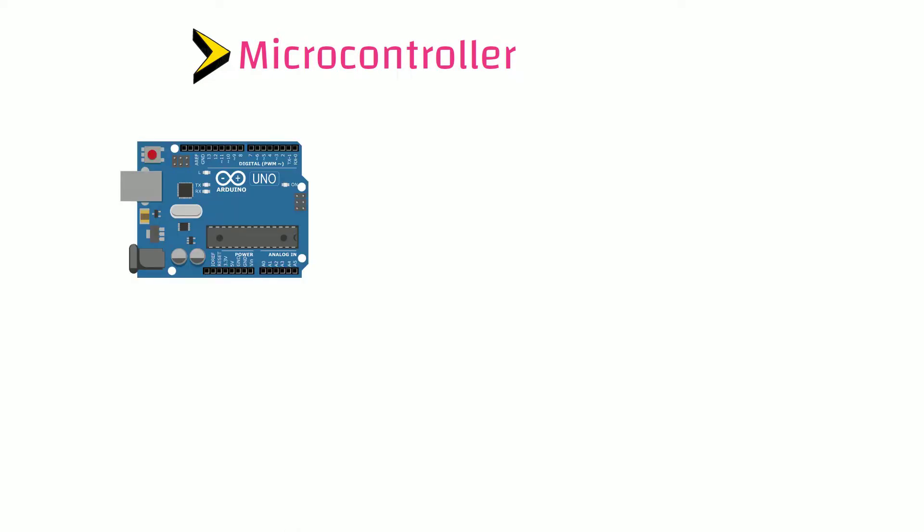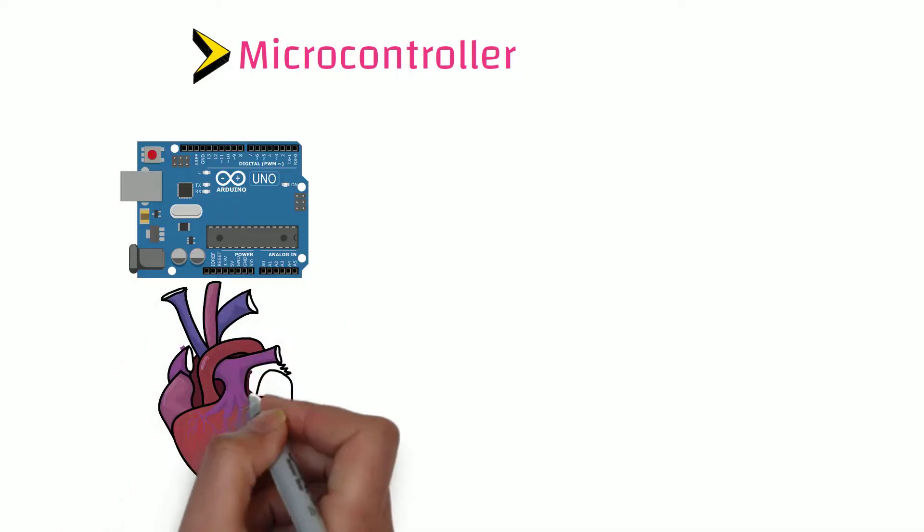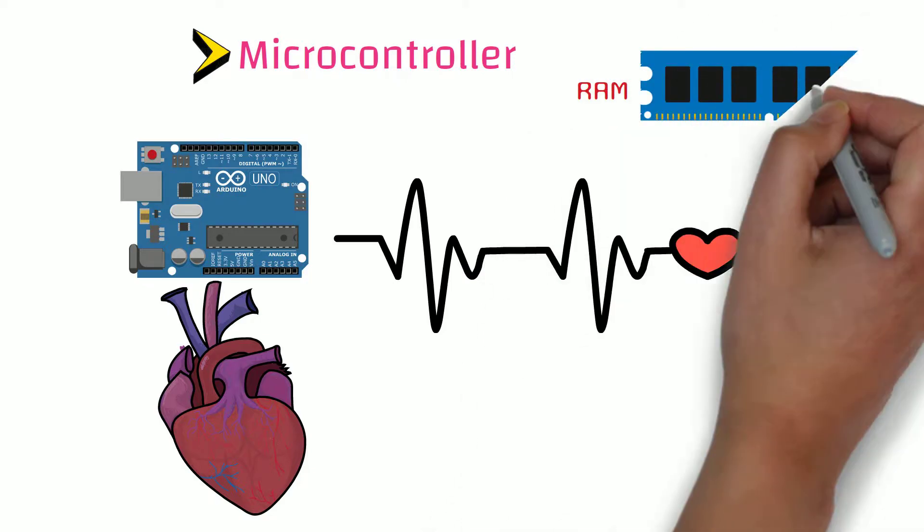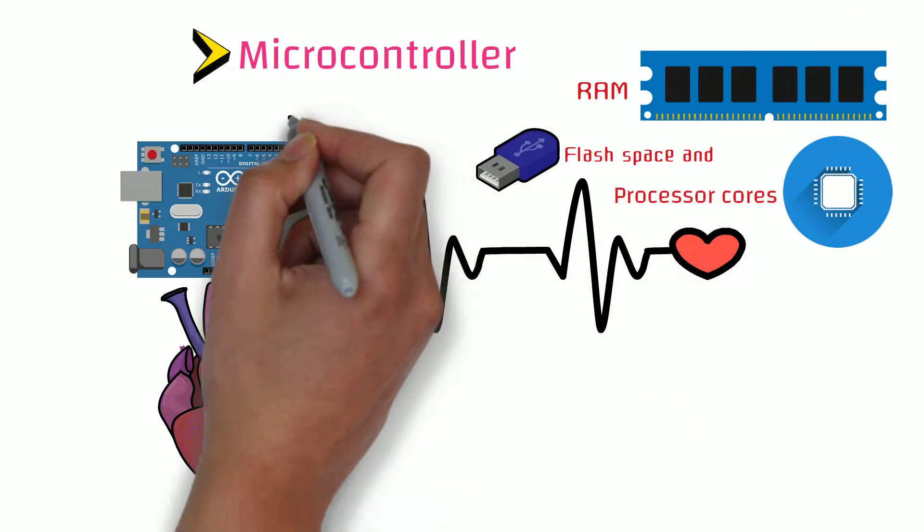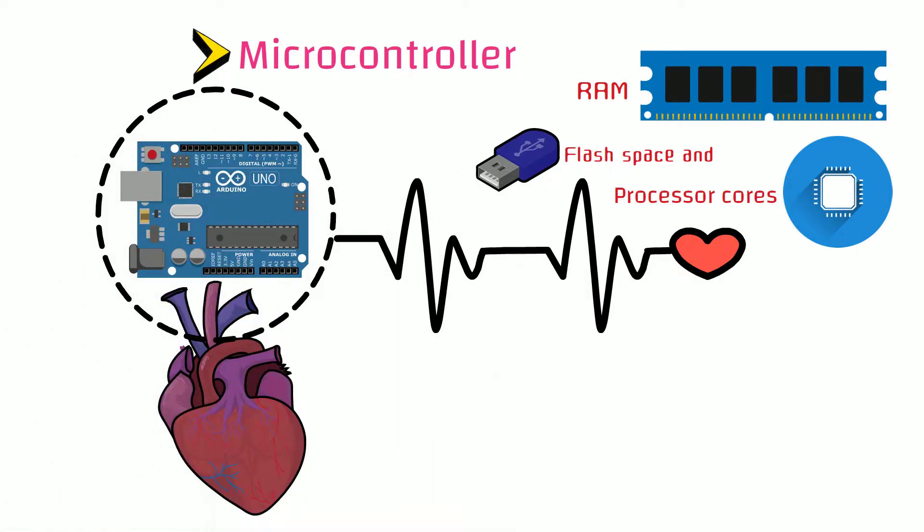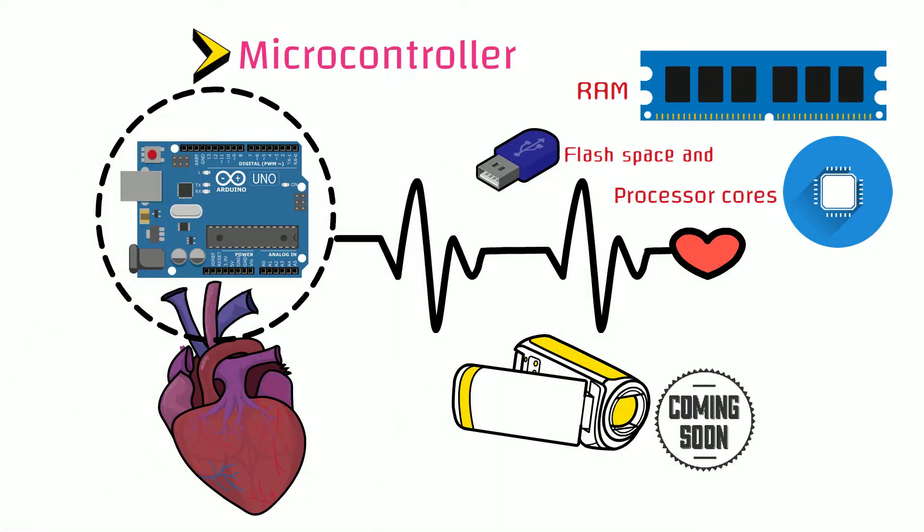Microcontrollers are considered to be the heart of the embedded system. They contain RAM, flash space and processor cores. Since this is such an important component, we have an entire video coming up in this course on microcontrollers. We will learn it more when the time comes.